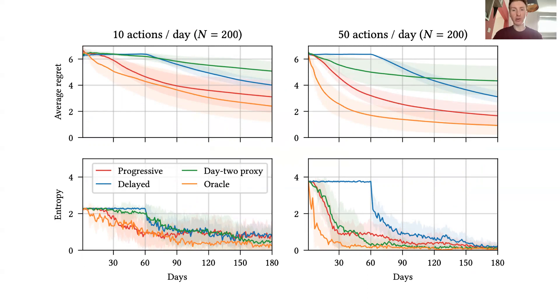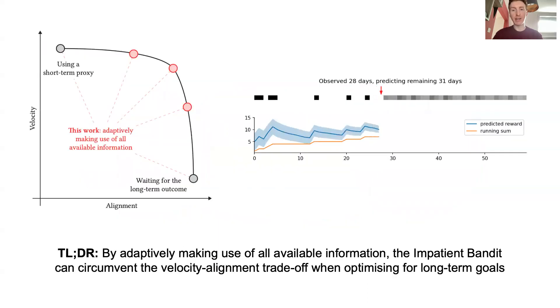In summary, by utilizing all of the data available to us at any given time, the impatient bandit allows us to circumvent the velocity-alignment trade-off when optimizing for long-term metrics.